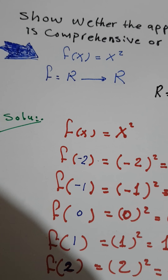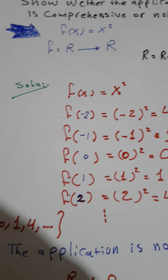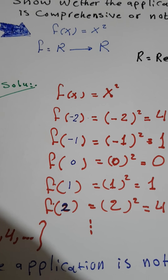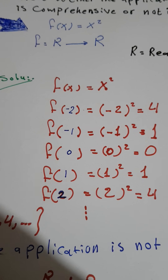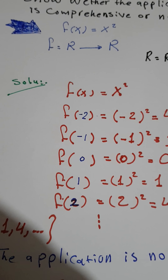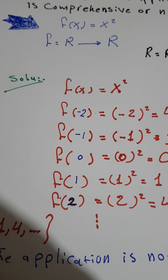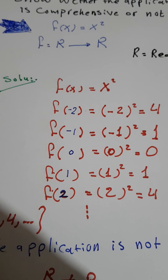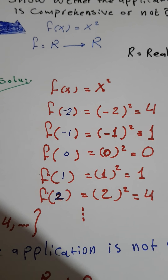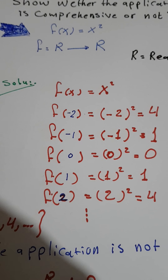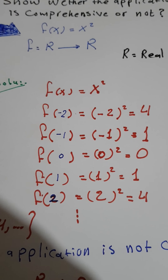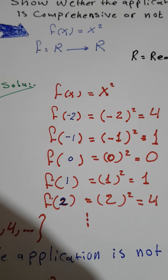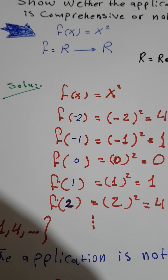We take five example values. f(x) = x², so f(-2) = (-2)² = positive 4, because negative times negative is positive. And f(-1) = (-1)² = 1.